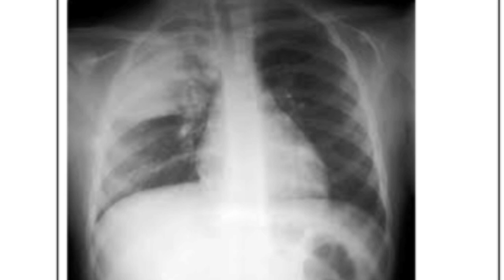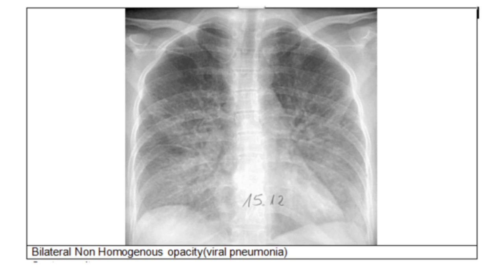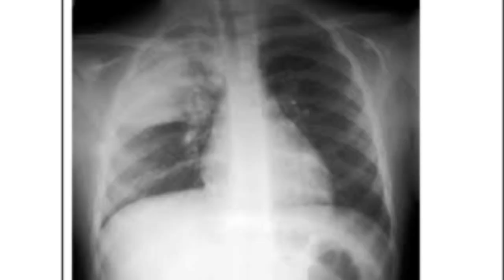On X-ray, most of the time you can see consolidation or lobar pneumonia — the lung parenchyma is replaced by consolidation appearing white on X-ray. The first X-ray shows right upper lobe consolidation, the second shows left lower zone consolidation, and the third shows bilateral diffuse infiltrates in both lung fields — a classical feature of viral pneumonia. Upper lobe consolidation should raise suspicion for Klebsiella pneumonia, while Streptococcal pneumonia can occur in any lobe.